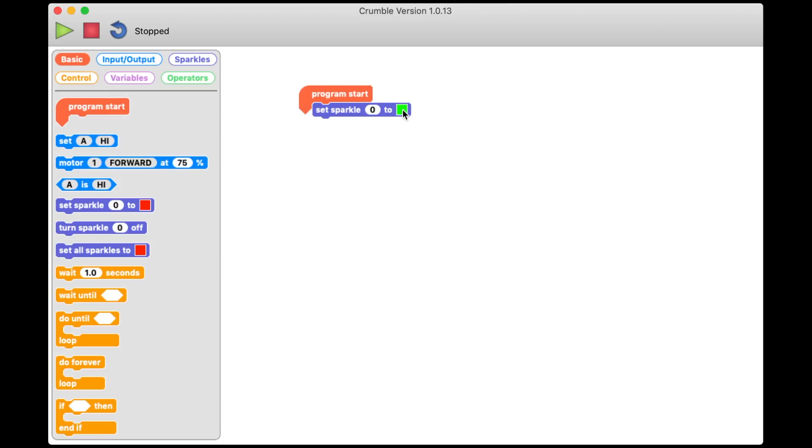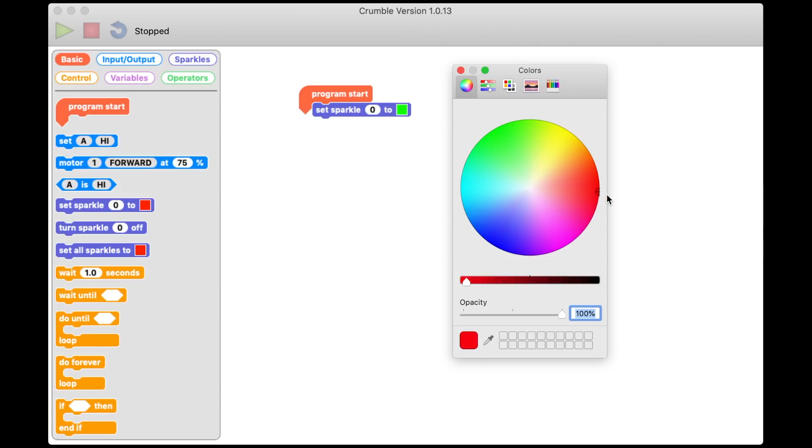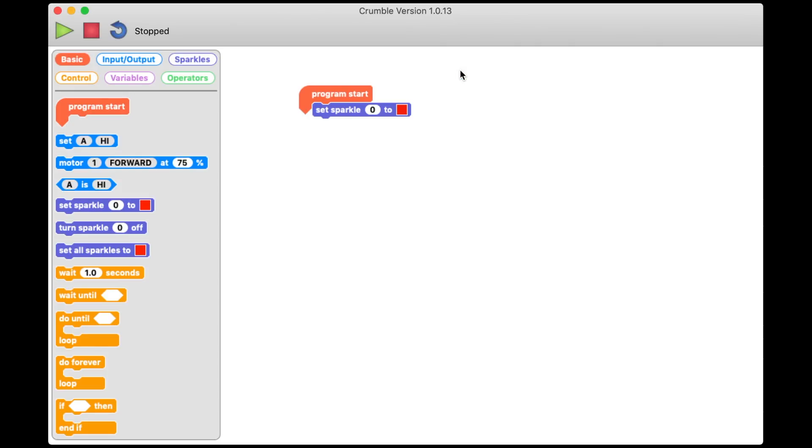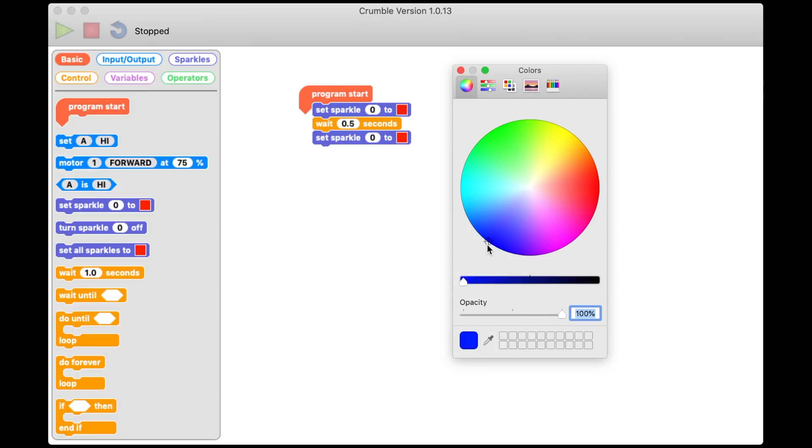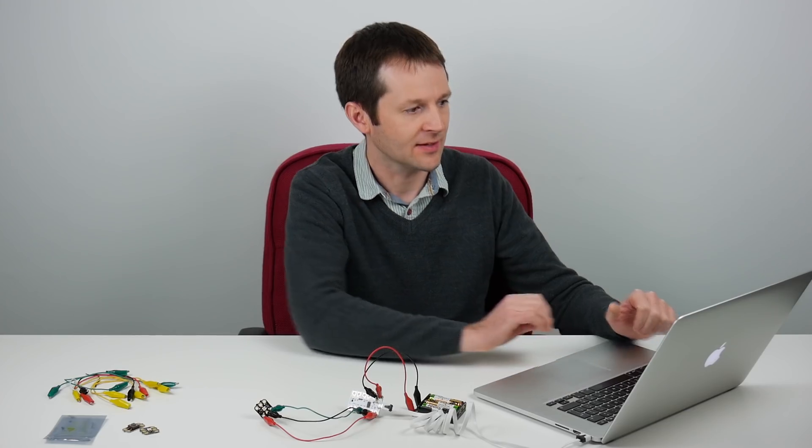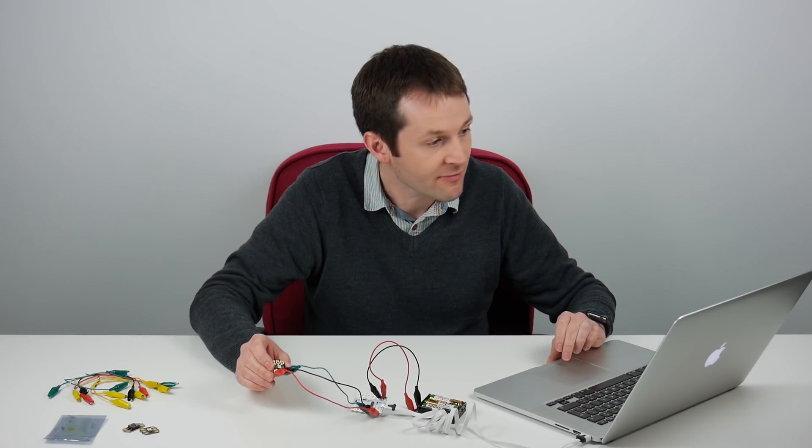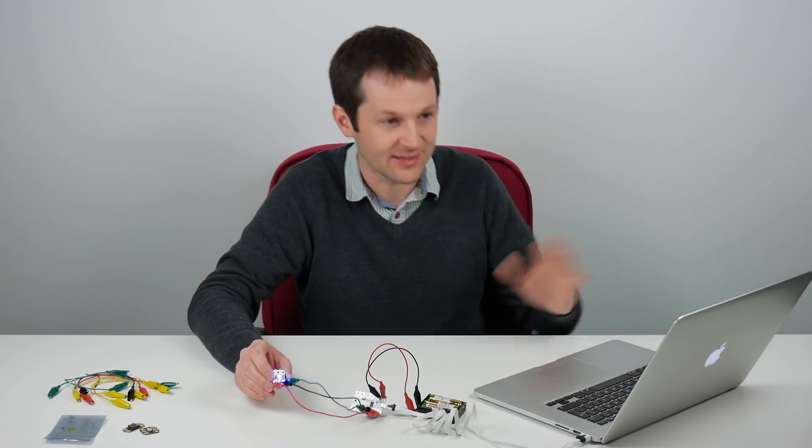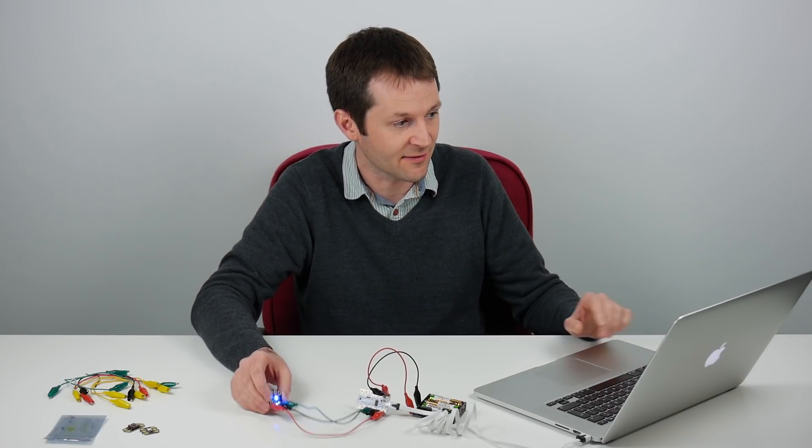First things first, we'll change that green to a nice red. Then we want to wait a period of time. I'm going to drag a wait block in there and it says wait one second at the minute. I want it to be quite a fast flash, so I'm going to wait 0.5 seconds. And then after 0.5 seconds I want to change that sparkle instead of being red to blue. If I just test this program now, I can see if I run it it'll go red and then blue and then it's finished so it'll just stay there forever.